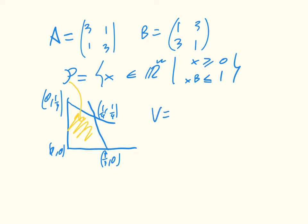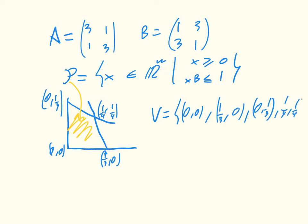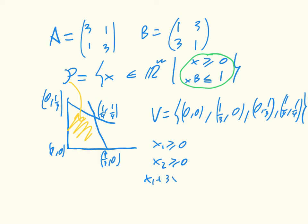Our vertices, just to write them down again, are (0, 0), (1/3, 0), (0, 1/3), and (1/4, 1/4). Recall that these inequalities correspond to: X1 ≥ 0, X2 ≥ 0, X1 + 3X2 ≤ 1, and 3X1 + X2 ≤ 1.